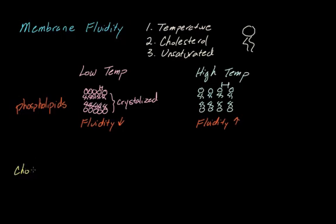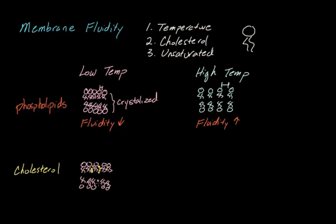What happens when we add cholesterol? At low temperatures, phospholipids still tend to cluster closely together, but occasionally cholesterol inserts itself between the phospholipids. It doesn't do this for every single phospholipid, but it'll occasionally insert itself into the membrane. The presence of cholesterol increases the distance between some of the phospholipids, and as that distance increases, fluidity can also increase.